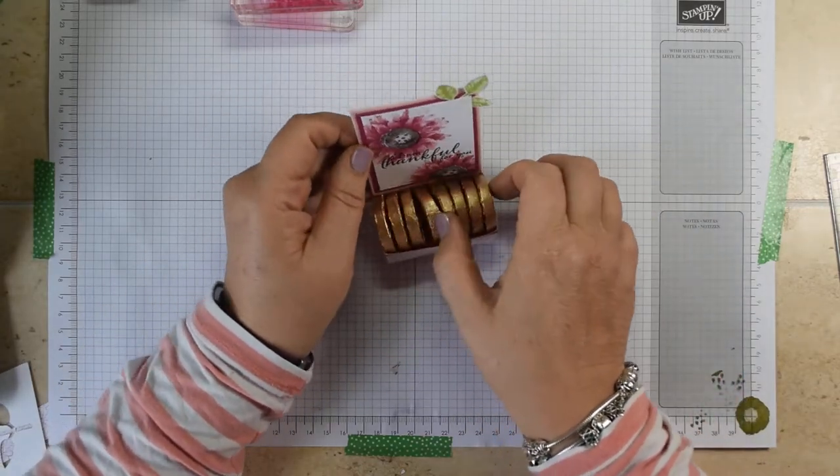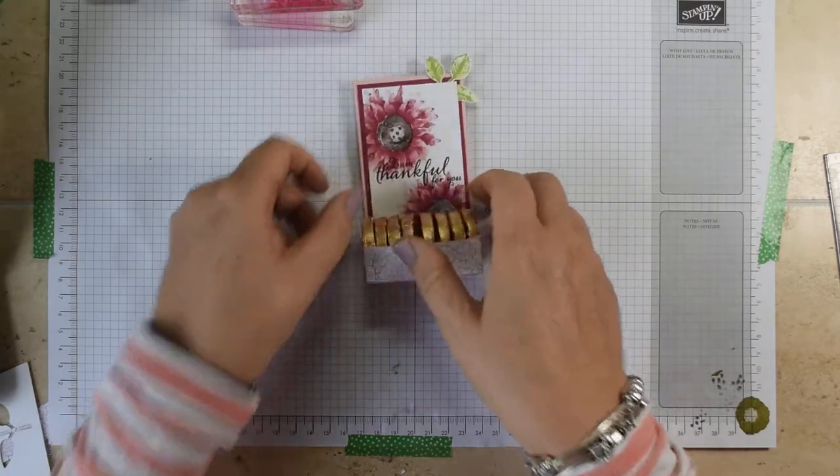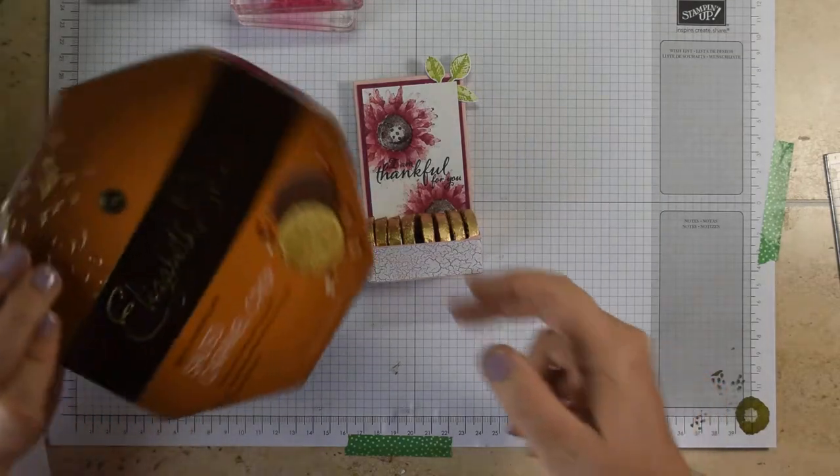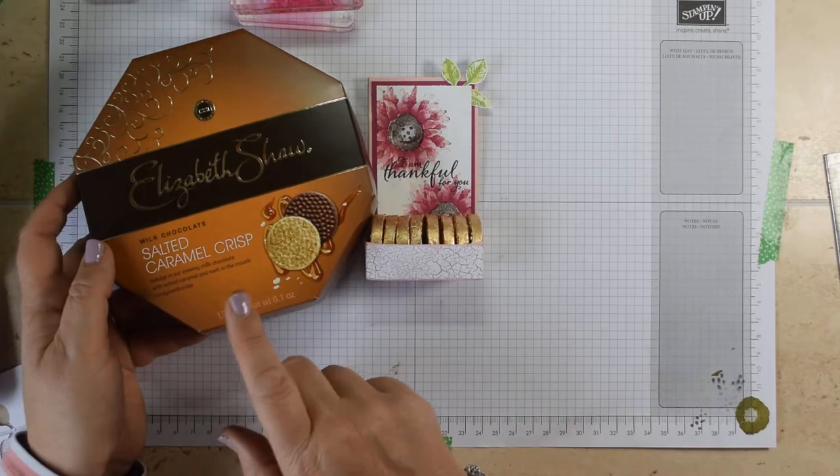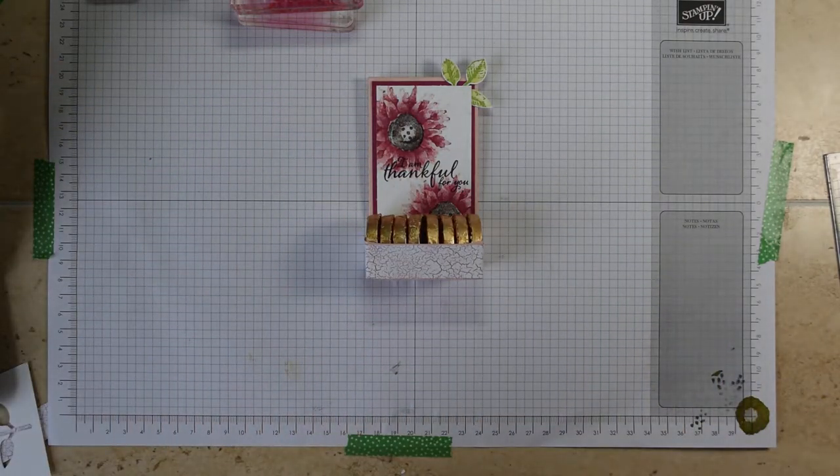But what I've done here is this is sized to fit either two Ferrero, but it will also hold eight of the lovely Elizabeth Shaw mints which are these ones here. These ones are salted caramel, but they come in mint and I think orange as well. I think you can get them abroad as well, I hope so.